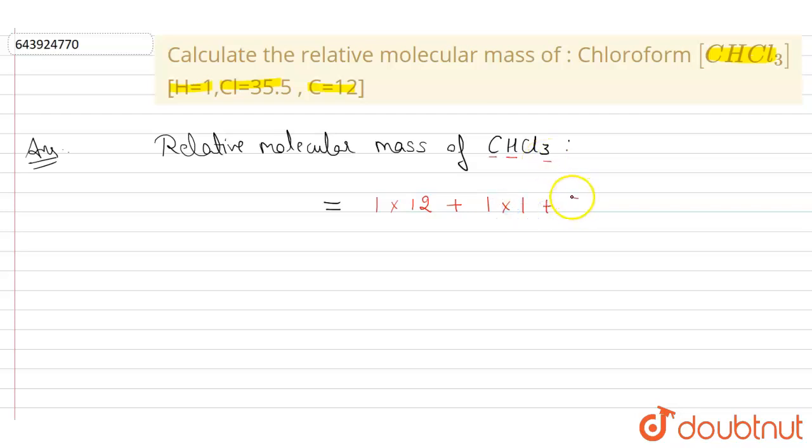Plus, there are three chlorine atoms. The atomic mass of one chlorine atom is 35.5.